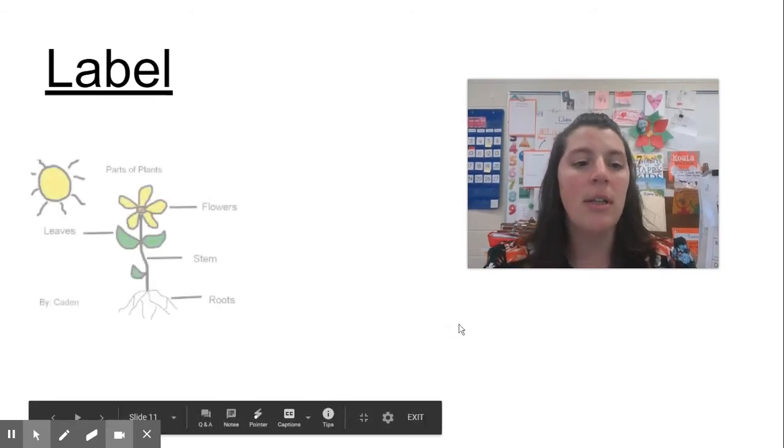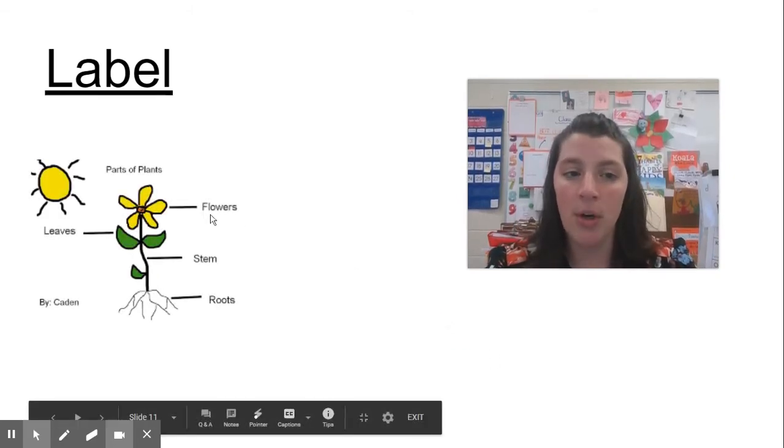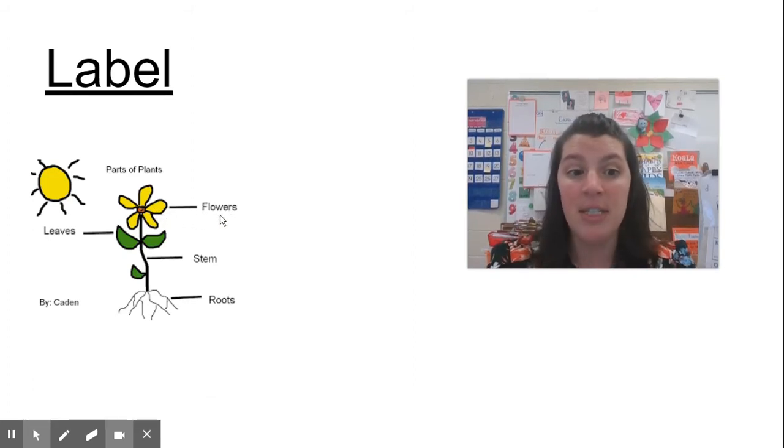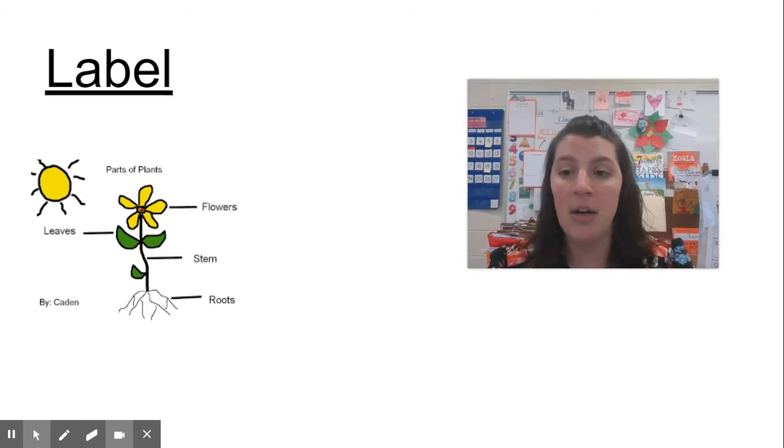So today we're going to do step two which is labeling. Remember a label is when you add a word to a part of the picture, like this part says flowers, this label, and stem and roots. These are important things that we're going to want to remember when we get to the part of writing our words.